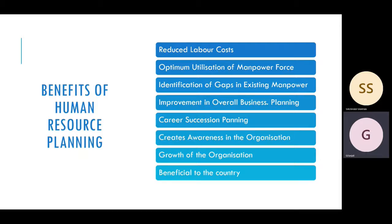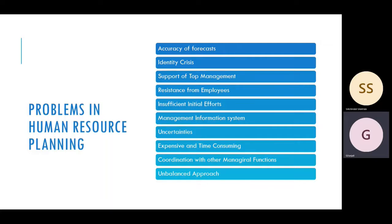Next are the problems in human resource planning. The first problem is accuracy of forecast — you cannot be 100% accurate in forecasting how many persons are needed and available. The second problem is identity crisis — the management does not clearly understand the purpose or process of the planning, so it doesn't get executed. The third problem is lack of support from top management — if top management does not provide full cooperation and resources, the plan will not be effective or executed.